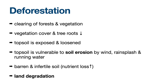Deforestation means large-scale removal of trees. With deforestation there will be some problems. The first one is soil erosion — the topsoil is exposed with the vegetation cover, with tree roots binding the soil tightly.